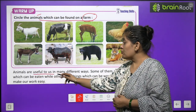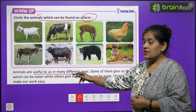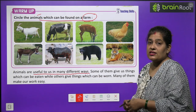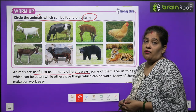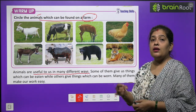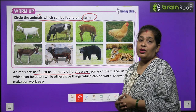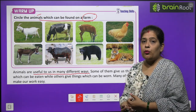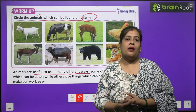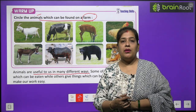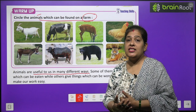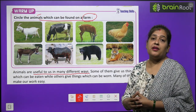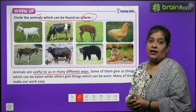Animals are useful to us in many different ways. Animals, matlab janvar, hamare liye bohot upyogi hai, alag alag tariqe se. Aap ko pata hai ki hum animals se bhi bohot sari cheezein milti hai. Hame apna food bhi animals se milta hai.